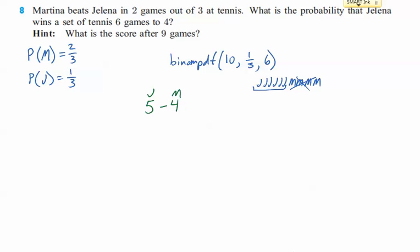You can't do anything else. It can't be six to three because if it was six to three, they'd be done. They wouldn't play the last game. They would only have nine games. And so, after nine games, the score has to be five to Jelena and four to Martina so that Jelena can win that last game and end the set.